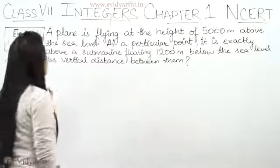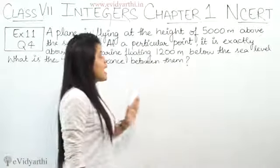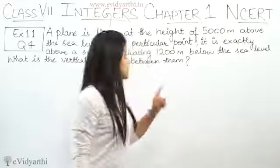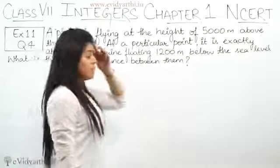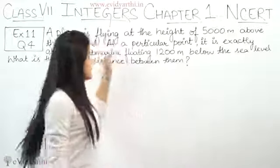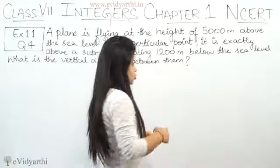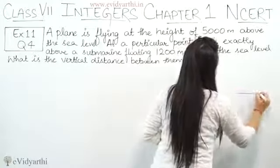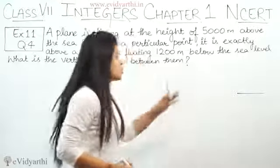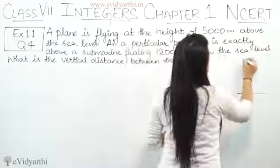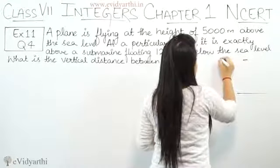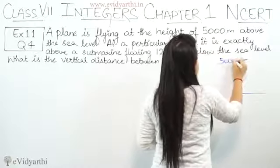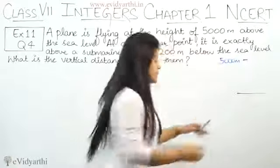This question is: a plane is flying at the height of 5000 meters above sea level. Let's suppose if this is your sea level, this is your plane flying at the height of 5000 meters above the sea level.